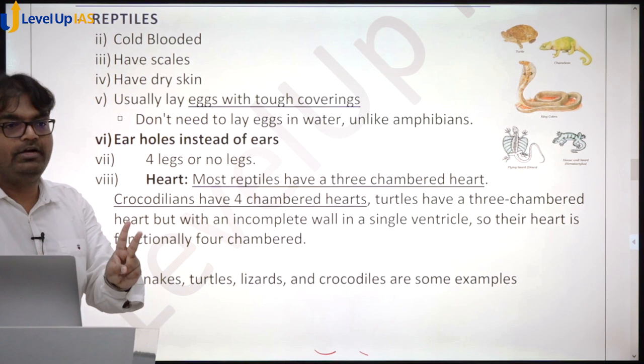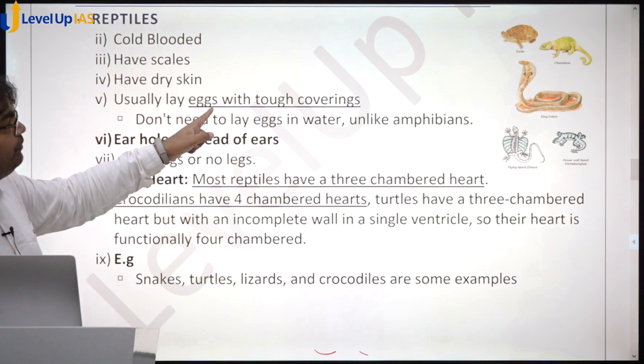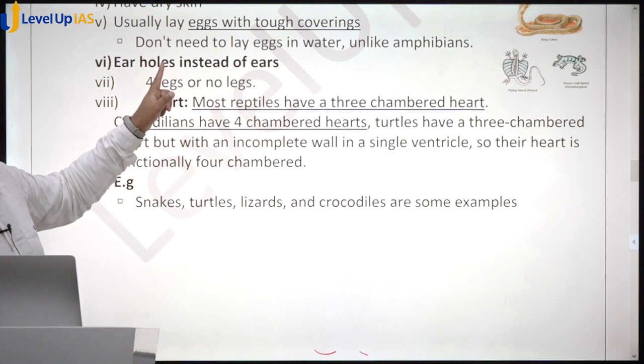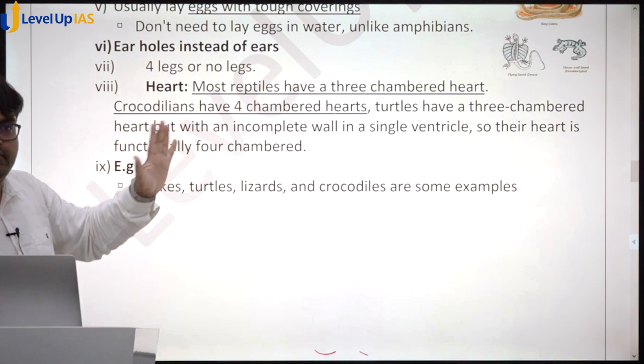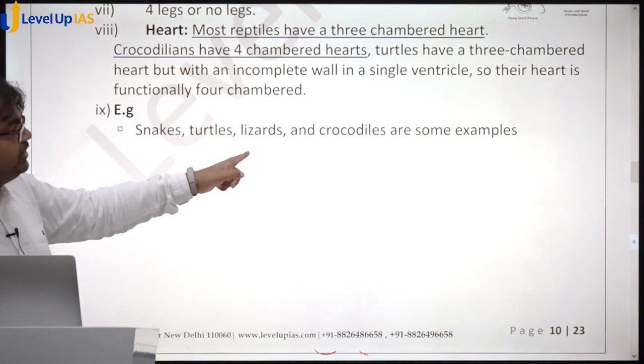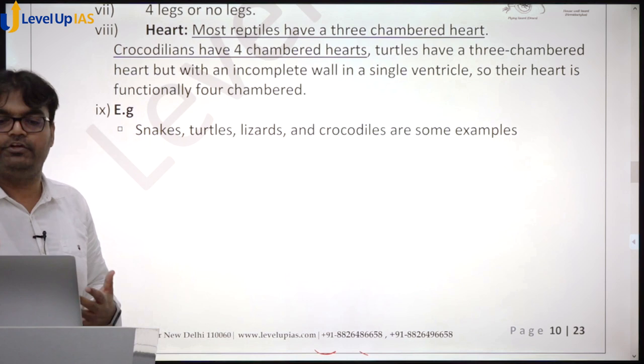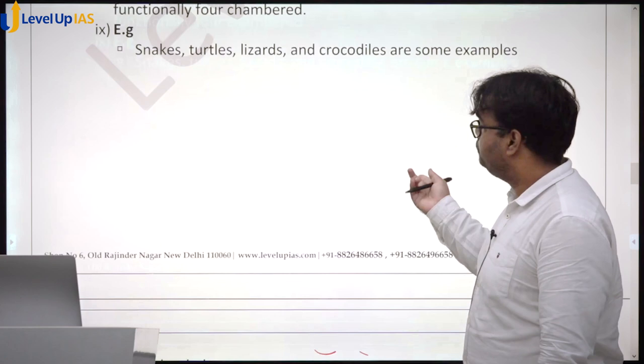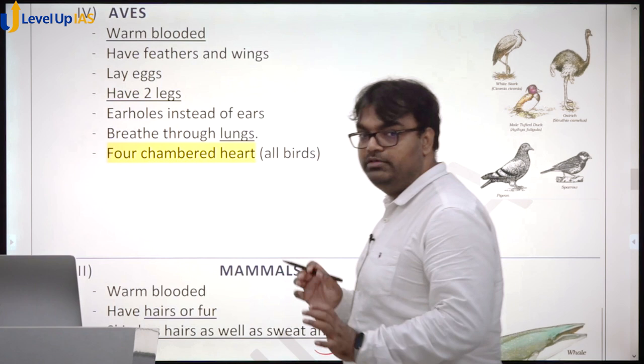Reptiles are also cold-blooded. Fish, amphibians, and reptiles are all cold-blooded. Reptiles have scales and dry skin. They usually lay eggs with a tough covering. They have small ear holes instead of external ears. Their hearts are generally three-chambered, but crocodiles are an exception with a four-chambered heart. Examples include snakes, turtles, lizards, and crocodiles.